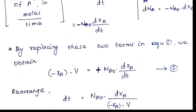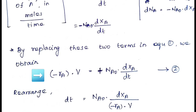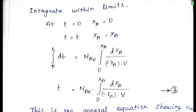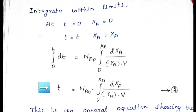Substituting both terms into the equation gives: (−rA)·V = NA0·dXA/dt. Rearranging: dt = NA0·dXA / [(−rA)·V]. Integrating with limits — at t = 0, XA = 0 and at time t, conversion is XA — we get the performance equation: t = NA0 · ∫₀^XA dXA / [(−rA)·V].